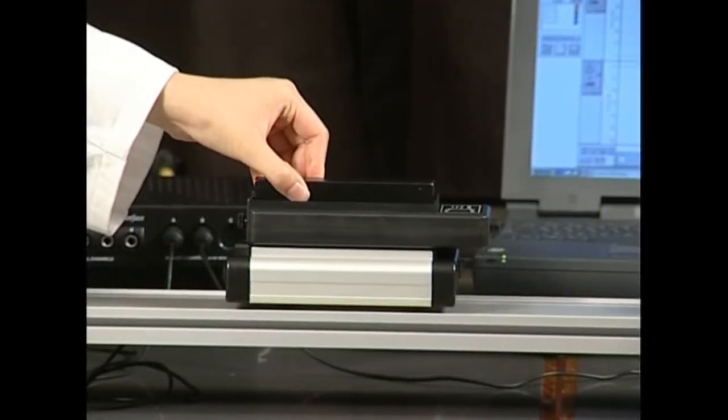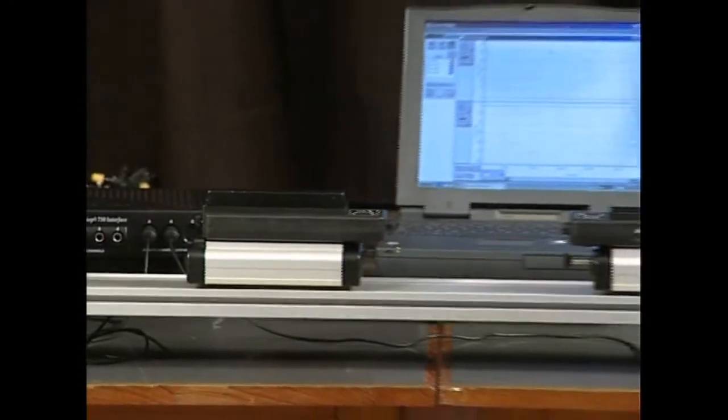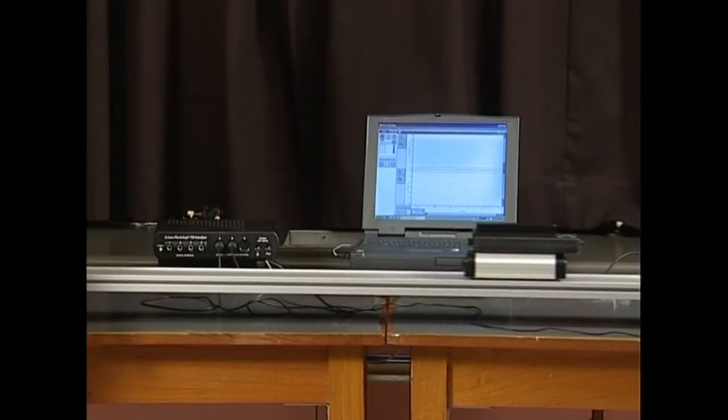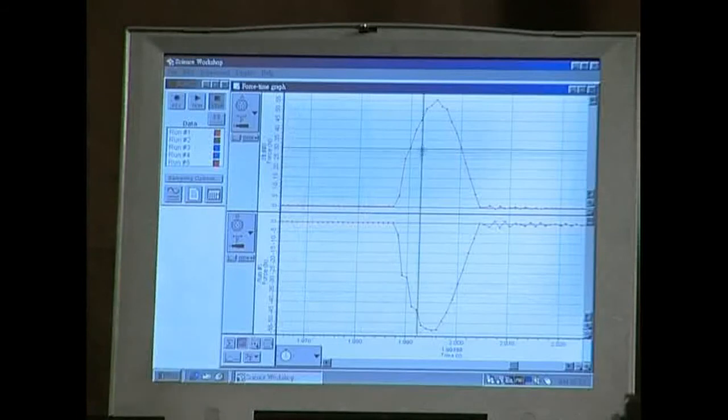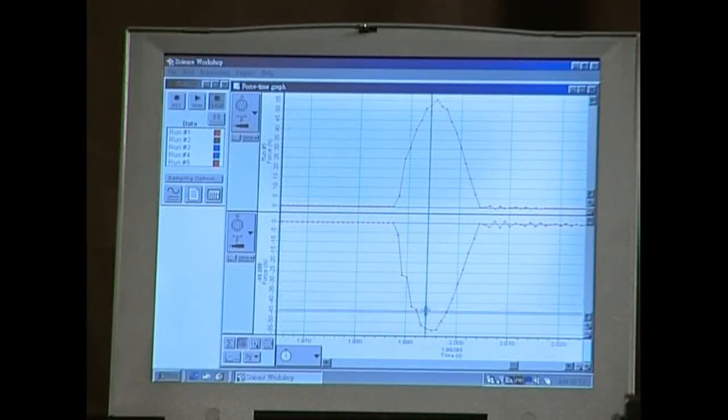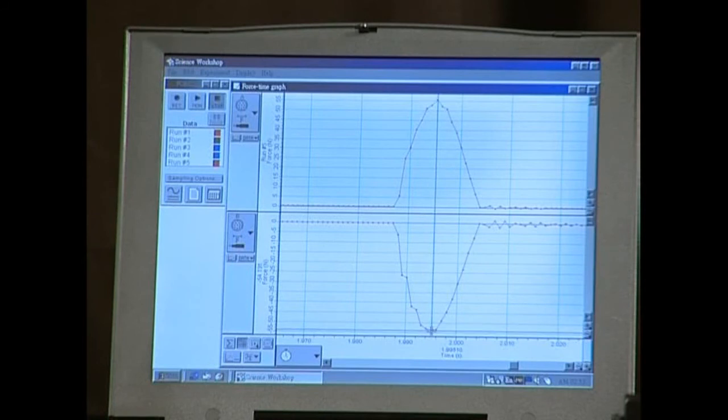Now we repeat both cases by adding a mass bar to double the mass of trolley A. How are the magnitudes of the forces experienced by the trolleys related to the masses of the trolleys during collision?